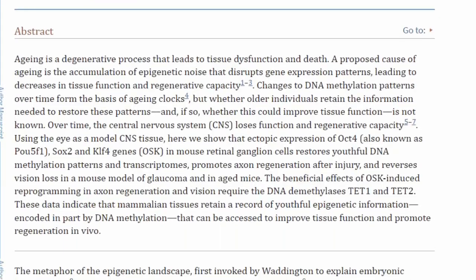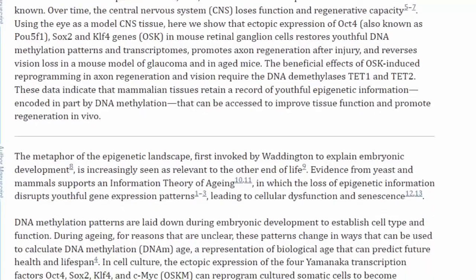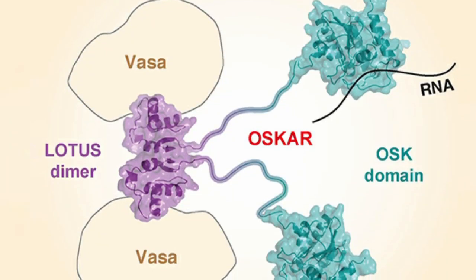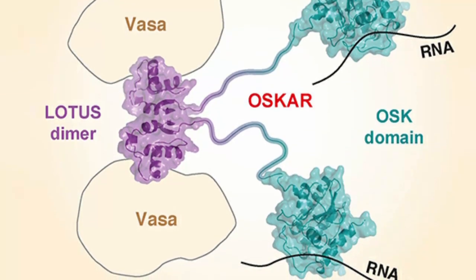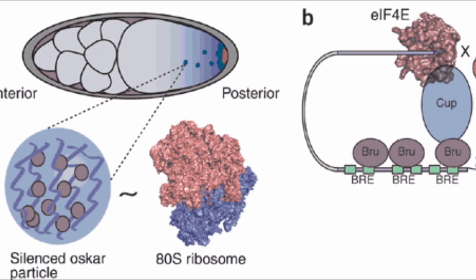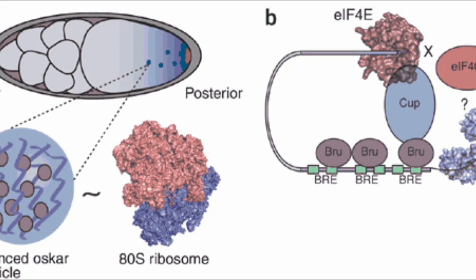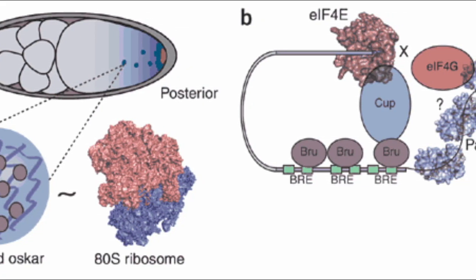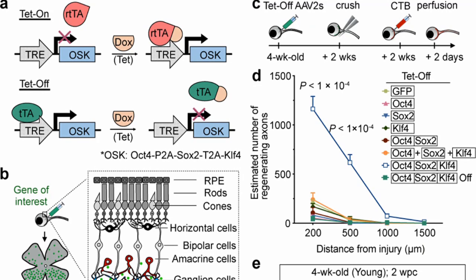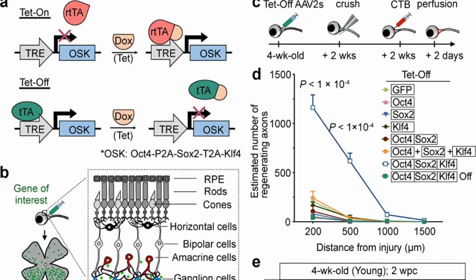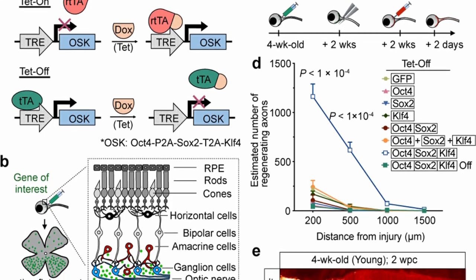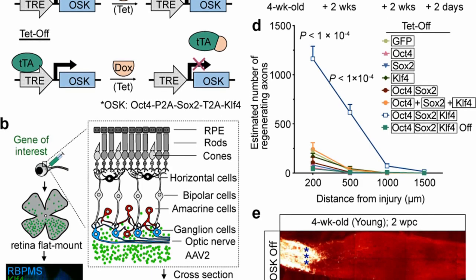One study found that the epigenome of a cell could be altered through utilization of something known as OSK-mediated rejuvenation. OSK is a protein that plays a critical role in embryonic development. It is involved in the formation of the posterior pole plasm, which contains specialized factors that specify germ cells in the developing embryo. The concept of OSK-mediated rejuvenation involves introducing OSK and other factors into cells, tissues, or organs to reset their developmental or differentiated state.